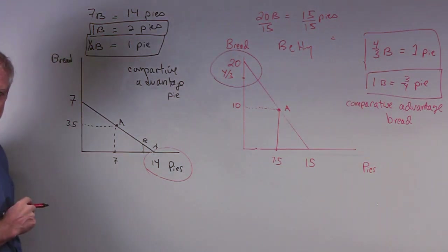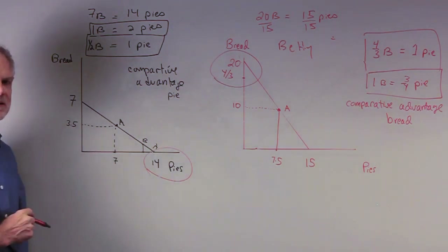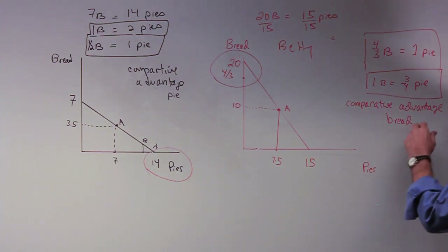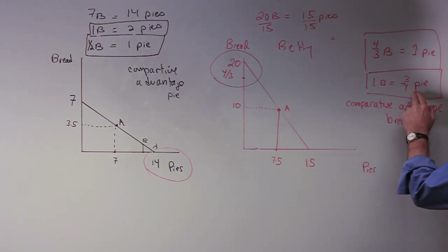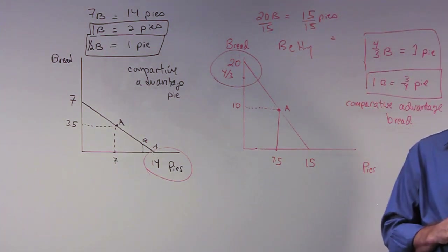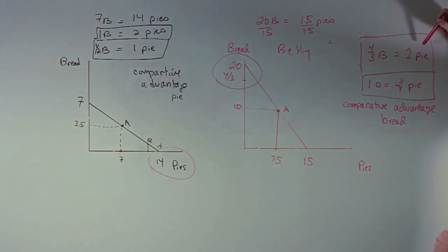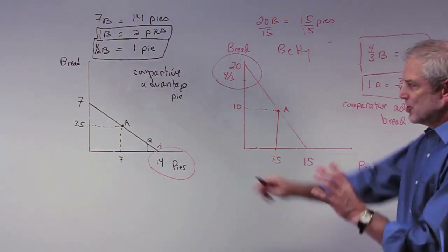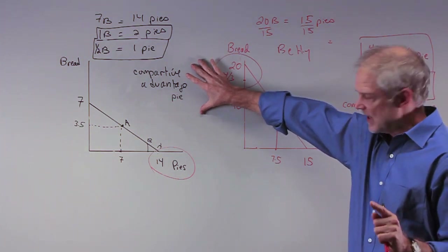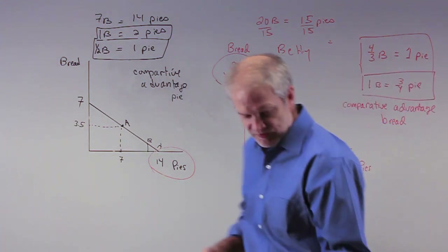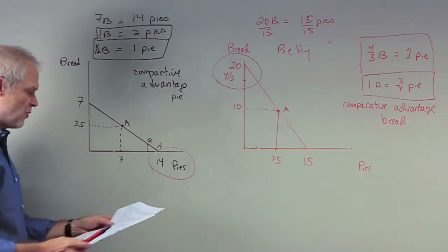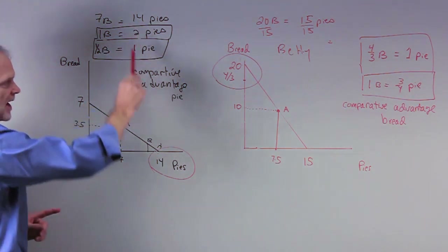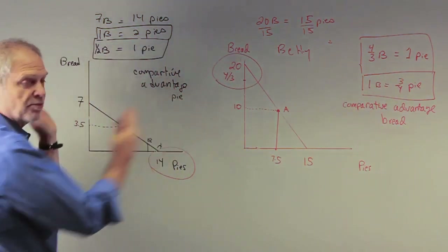What's really important is that you see why this is a good deal for both of them. Barney says he'd love another bread, and it would cost him two pies to get it. Betty says, don't do that — I'll give you a bread, because producing one bread only costs me three-quarters of a pie, so I'll give you one bread and only ask for one pie. Bread is expensive for Barney at two pies per bread, but cheap for Betty at three-quarters of a pie per bread.